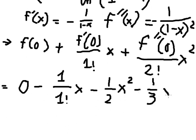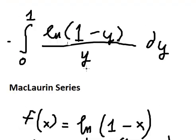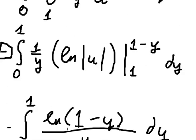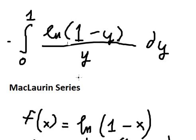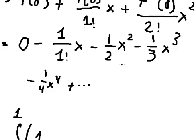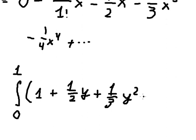We have negative one over one factorial times s, then negative one over two times s squared, and so on. Transforming this expression: we cancel the negative sign and simplify. Dividing by y, we get one, then y over two, then one over three times y squared, and so on.